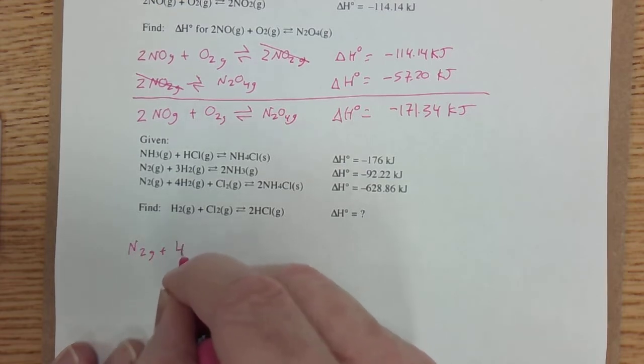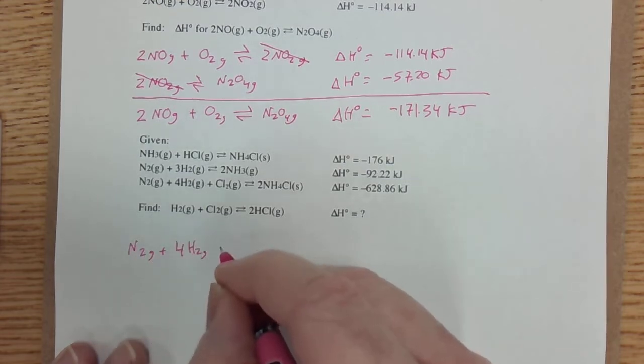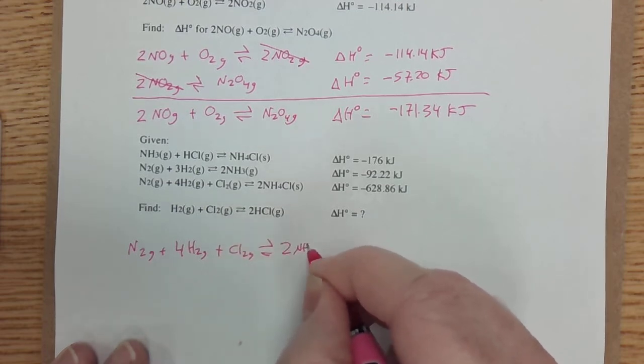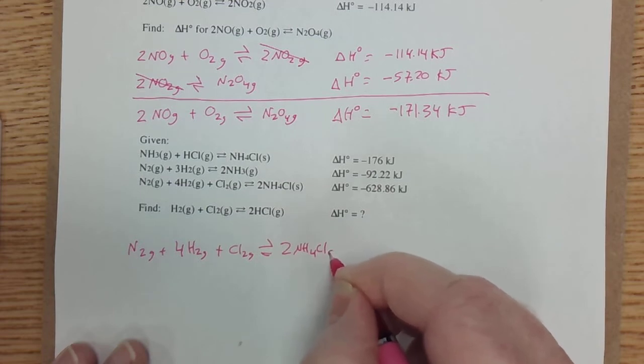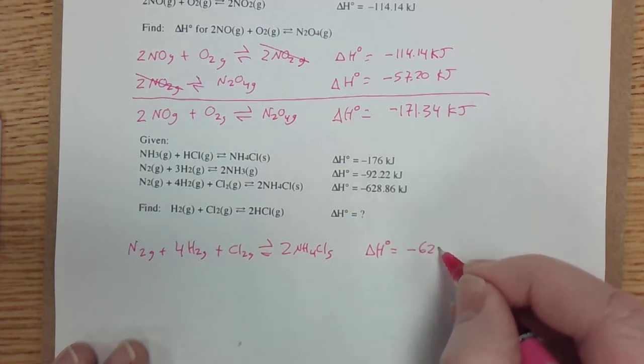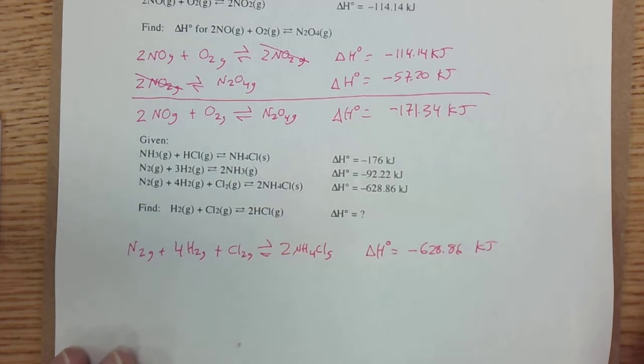N2 gas plus 4 H2 gas plus Cl2 gas gives me 2 NH4Cl solid. States of matter are really important. Make sure to pay attention to them. And that equals negative 628.86 kilojoules. That one's unchanged.